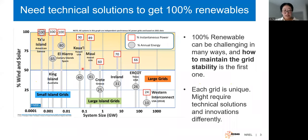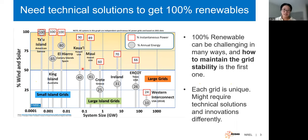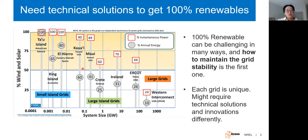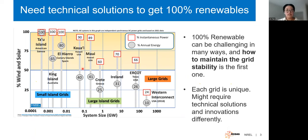Back to today's topic — grid forming. Many researchers have already mentioned that the concept of grid forming is not new; it has been introduced for many years for microgrid and island grid applications. However, for new generation technologies when we use them for large grids, for interconnected transmission networks, we need to revisit those stability issues from a different angle — the system-level angle from the grid stability or operational perspective. In today's presentation, I'm going to share some initial thoughts and studies from this angle.